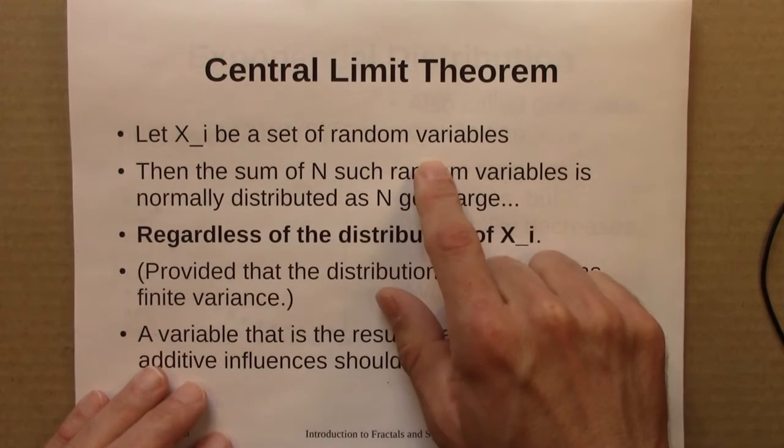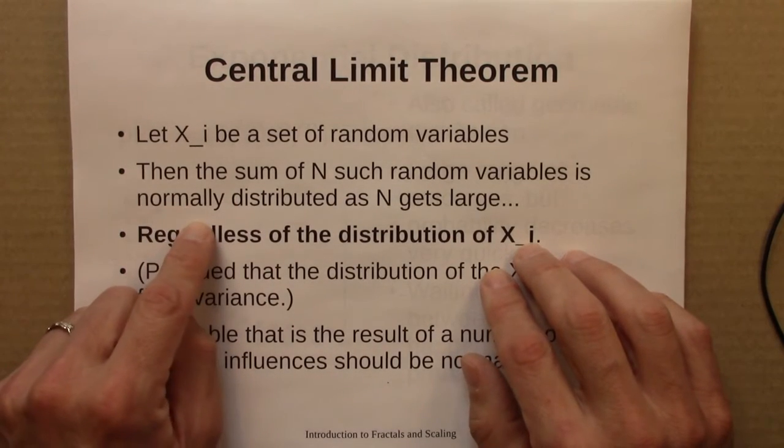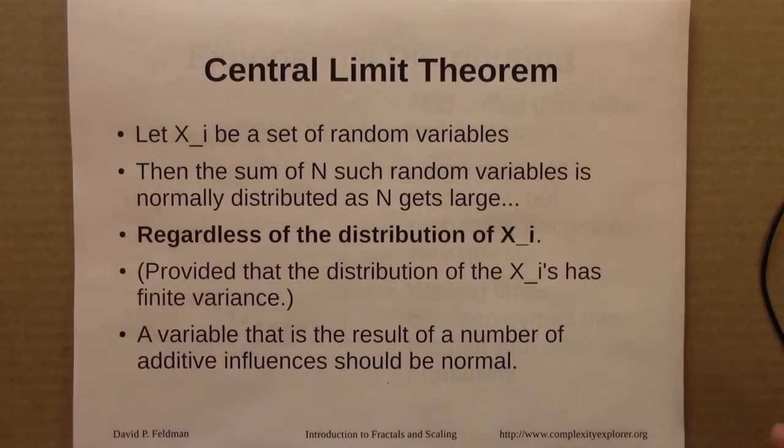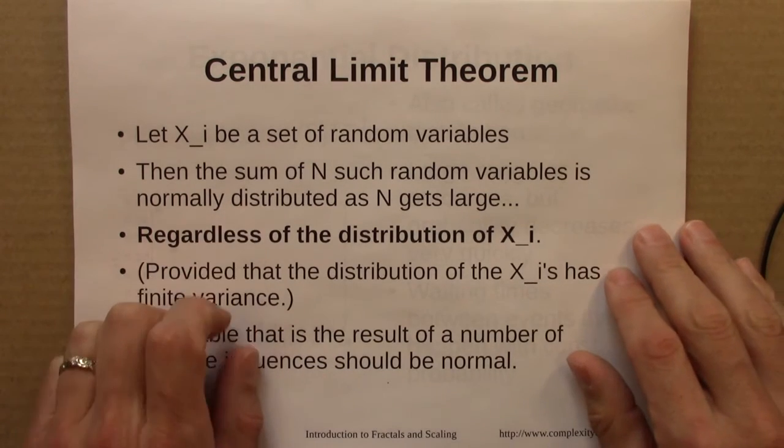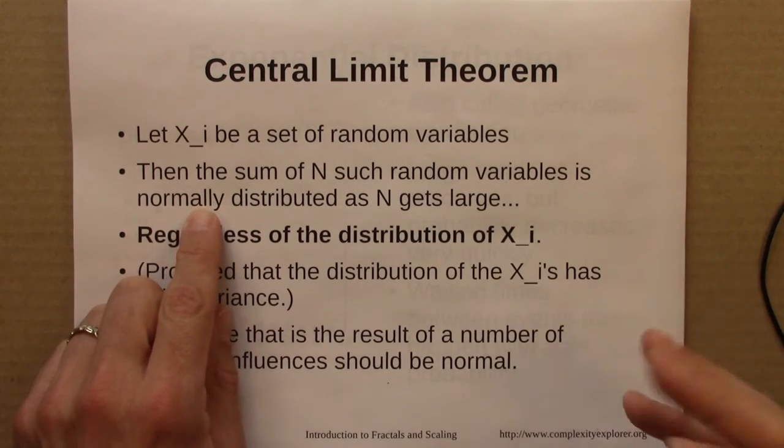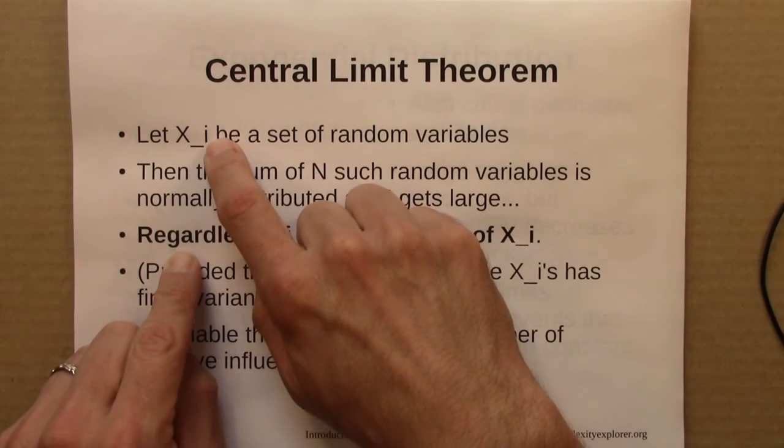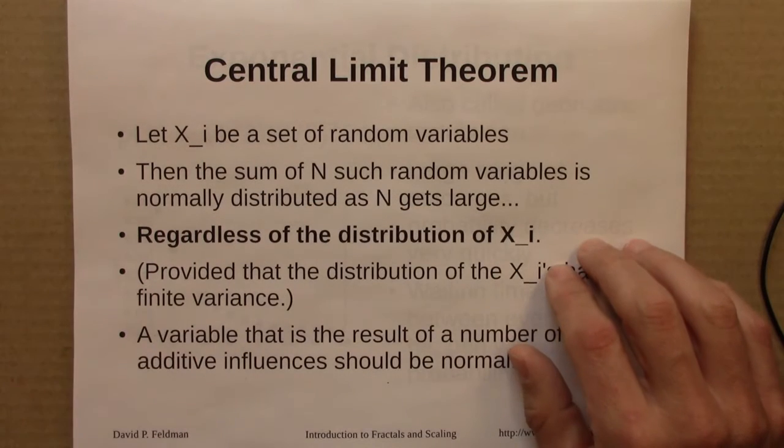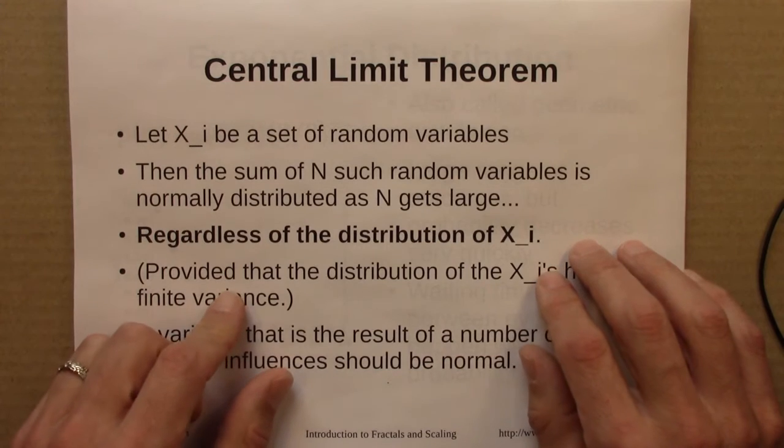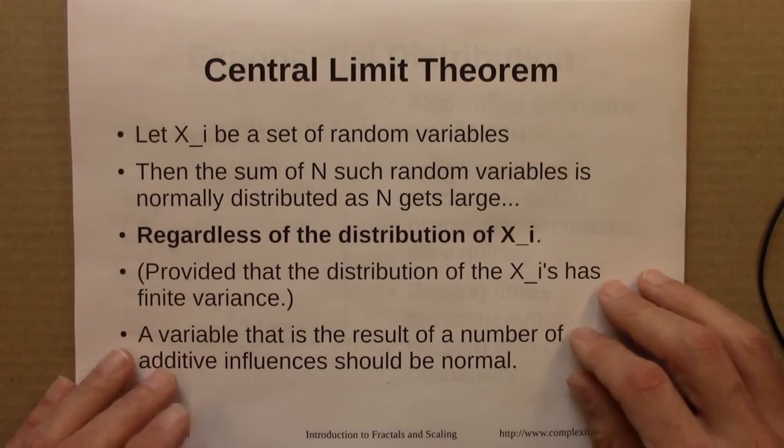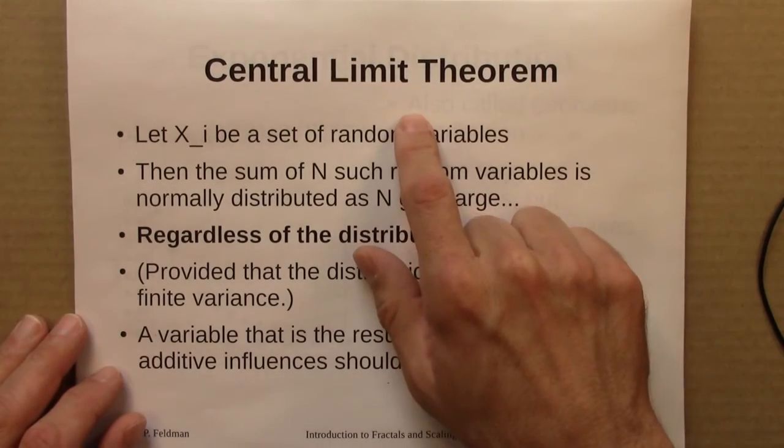Then I could add up those random variables, and that sum, that big number, would itself be a random variable. How would that sum be distributed? Well, it says that that's going to be normally distributed, as n gets reasonably large, regardless of the distribution of the variables themselves. So the example we did was a contrived example, where books come in only three different masses. Definitely, that's not a normal distribution. But if we add up a bunch of books, we get a normal distribution. So that's an example of the central limit theorem.